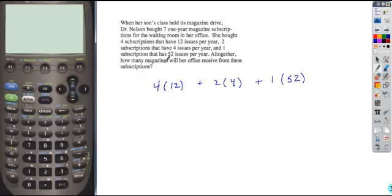Combining all of these, you'll have your total number of magazines that will be received. 4 times 12 is 48, 2 times 4 is 8, 1 times 52 is 52. If we combine these, 8 and 52 is 60, plus 48 gives you a total of 108 for your solution.